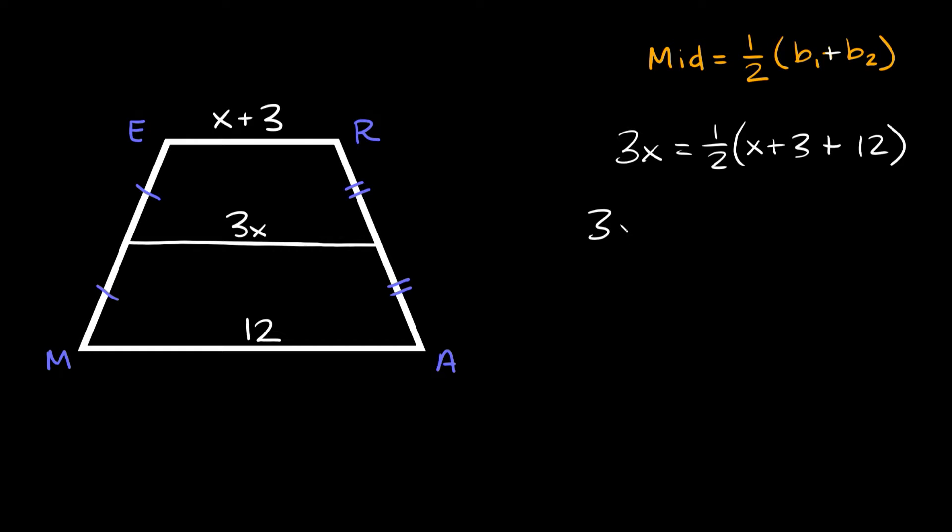So here we can say that 3x is equal to 1 half and then here, combining like terms, we have x plus 15. Now to get rid of this fraction, we can multiply by the reciprocal, so we can multiply by 2, and what we do to one side, we do to the other. So then on this side, 2 times 3x is equal to 6x, and that's equal to, on this side, the half and the 2 canceled out, so we're just left with x plus 15.